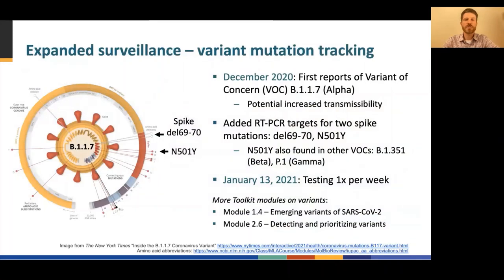News of a more transmissible variant of SARS-CoV-2 arrived in December of 2020. The variant of concern, known initially as B.1.1.7 and later designated alpha by the WHO, includes key mutations on the spike gene. See Module 1.4 of the toolkit for additional information about this and other emerging variants of SARS-CoV-2 and their mutations. The case study in Module 2.6 also presents an example of how some variants can be identified in clinical specimens.